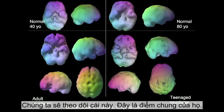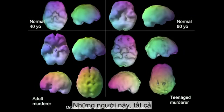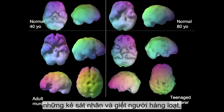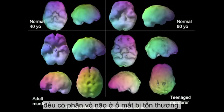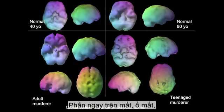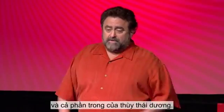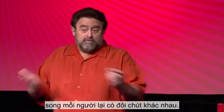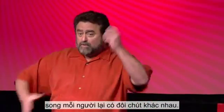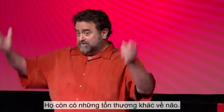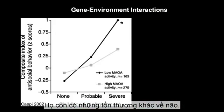The pattern is that every person I looked at who was a murderer and a serial killer had damage to their orbital cortex — right above the eyes, the orbits — and also the interior part of the temporal lobe. Every one of them had this pattern, but they were all a little different too, with other sorts of brain damage.